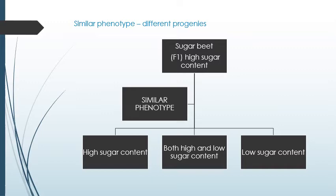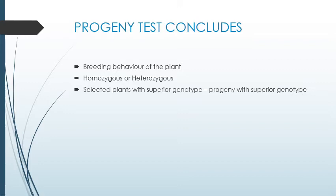He grew each and every individual sugar beet plant from F1 to F2 generation. He could identify three different groups: with high sugar content, low sugar content, and with both high and low sugar content. With this he concluded that the breeding behavior of the plant would be homozygous or heterozygous — if it has completely high sugar or completely low sugar it is homozygous, and with both high and low sugar it would be heterozygous. So a selected plant with a superior genotype means the progeny will also have a superior genotype.